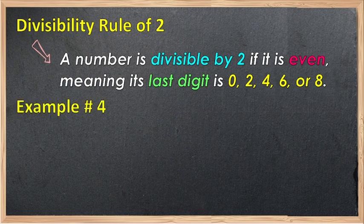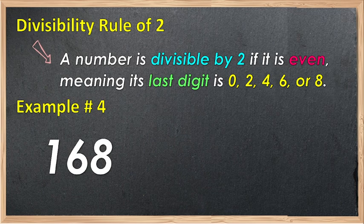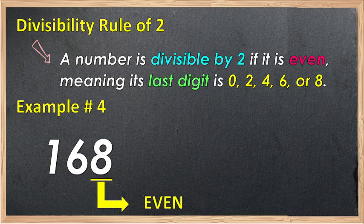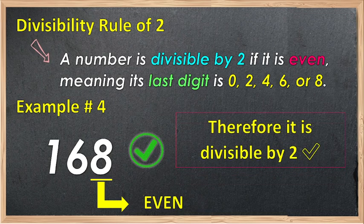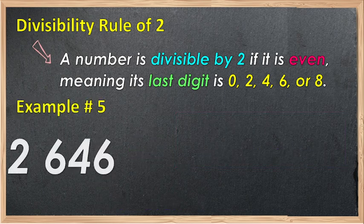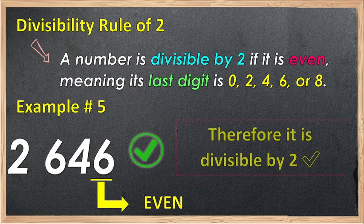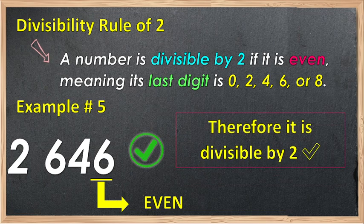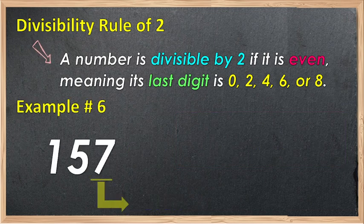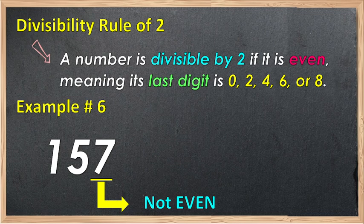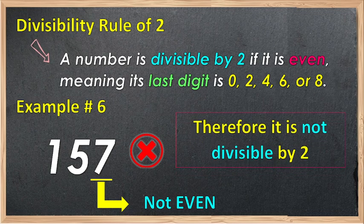Example number 4: we have 168. The last digit is 8 — an even number. Therefore, it is divisible by 2. Example number 5: 2,646. The last digit is 6 — an even number. Therefore, it is divisible by 2. Example number 6: we have 157. The last digit is 7 — not an even number. Therefore, not divisible by 2.